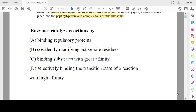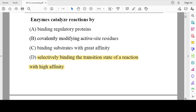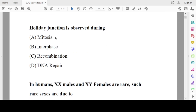Next: enzymes catalyze reactions by. What is the mode of action by which enzymes catalyze the reaction? Enzymes catalyze the reaction by selectively binding the transition state of the reaction with high affinity and by lowering the activation energy. Holliday junction is most commonly observed during recombination.